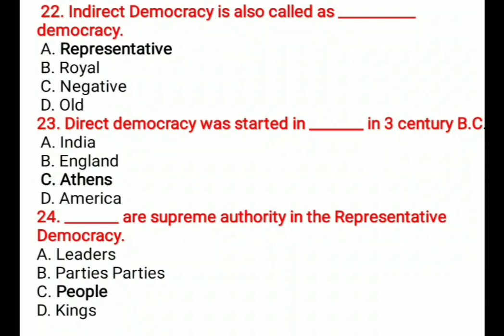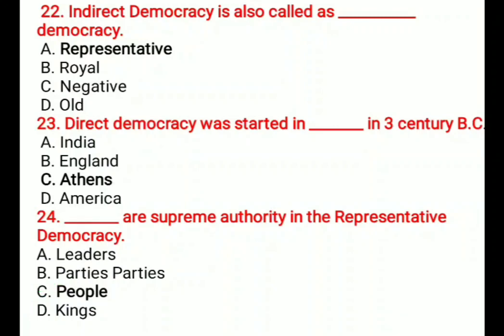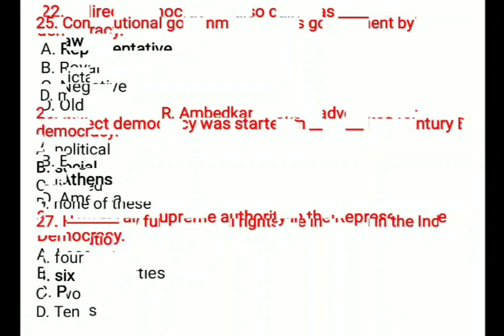Question 24: Who are the supreme authority in representative democracy? Options are: A) Leaders, B) Parties, C) People, D) Kings. The correct answer is C, People — people are the supreme authority in representative, that is indirect, democracy.